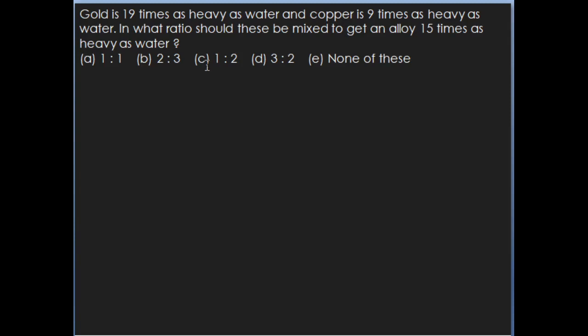So here they say gold is 19 times as heavy as water — so water is 1 unit, gold is 19 units. The same way copper is 9 times as heavy as water, so copper is 9 units. Gold and copper have to be mixed to make an alloy that should be 15 times as heavy as water. The best approach here is the allegation method.